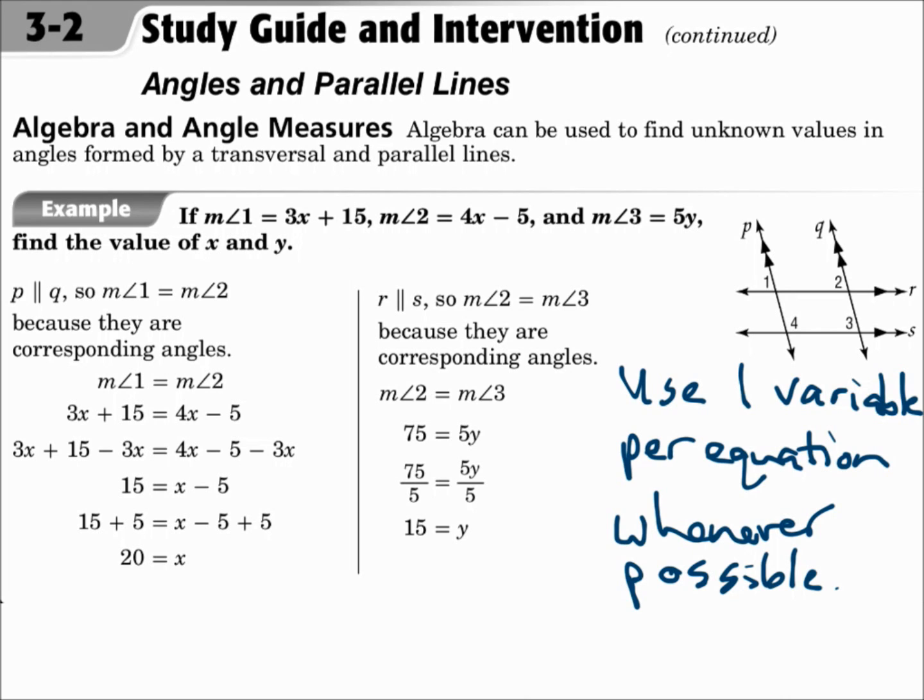When you're working on these, make sure that you're using just one variable per equation whenever possible. Keep your x's together in one equation, your y's together. You don't want x's and y's in the same equation, or else you'd be solving a system of equations. Most of the ones you'll see here, you'll be able to use one variable per equation. Just keep an eye out, pair them up. Are they equal, or do they add up to 180?